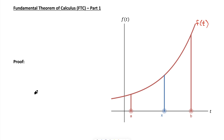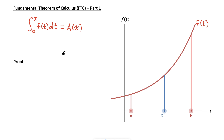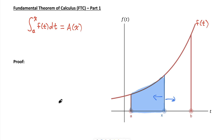The fundamental theorem of calculus states that if all those conditions are met, then the integral from a, which is some constant, up to our variable x of f of t dt is equal to a function of x, which we call A of x. We visualize the integral as the area under the curve between our lower and upper boundaries. Notice that if I moved x right or left on the interval between a and b, that would change the area under the curve. So we define the integral as being a function of x — as x changes, so will the area.